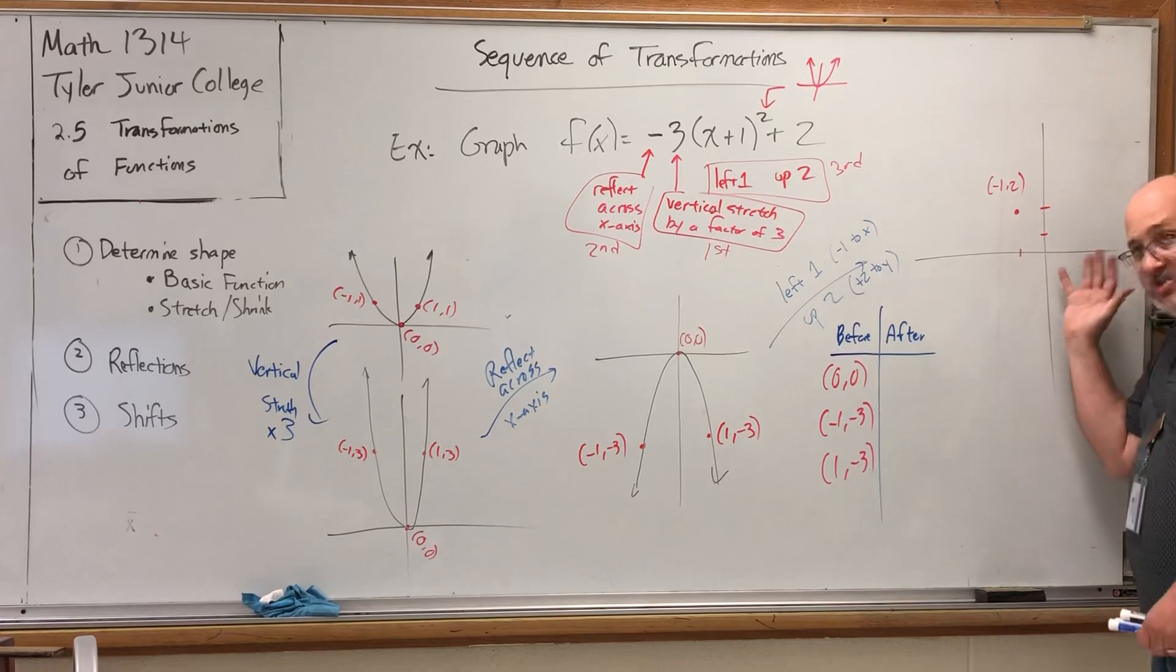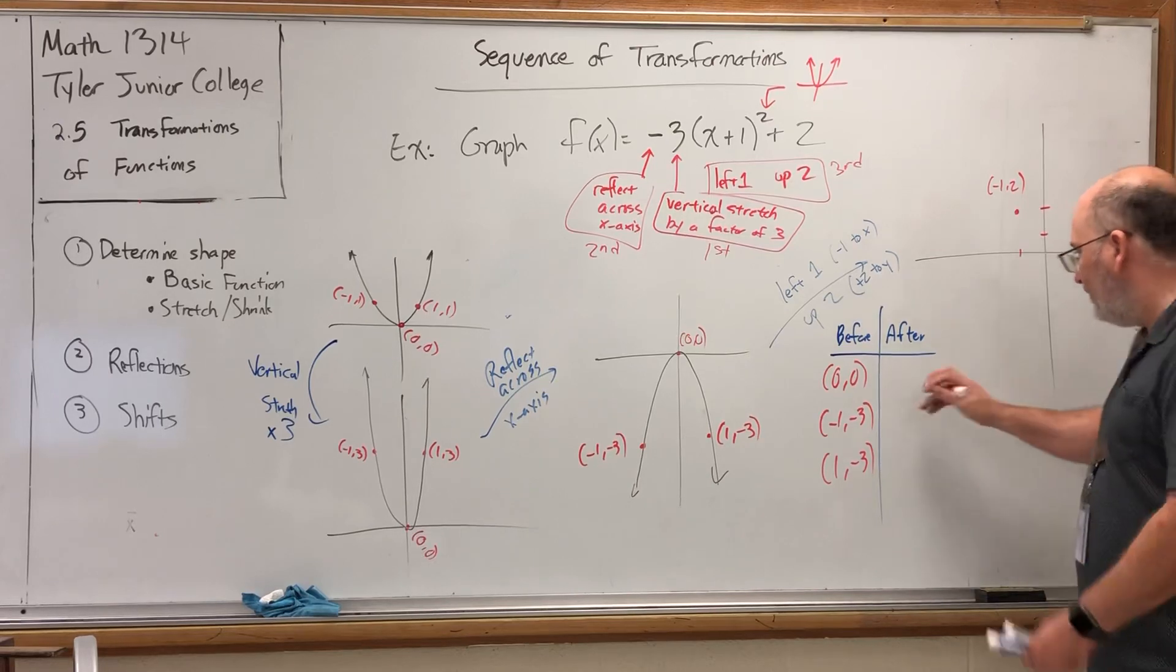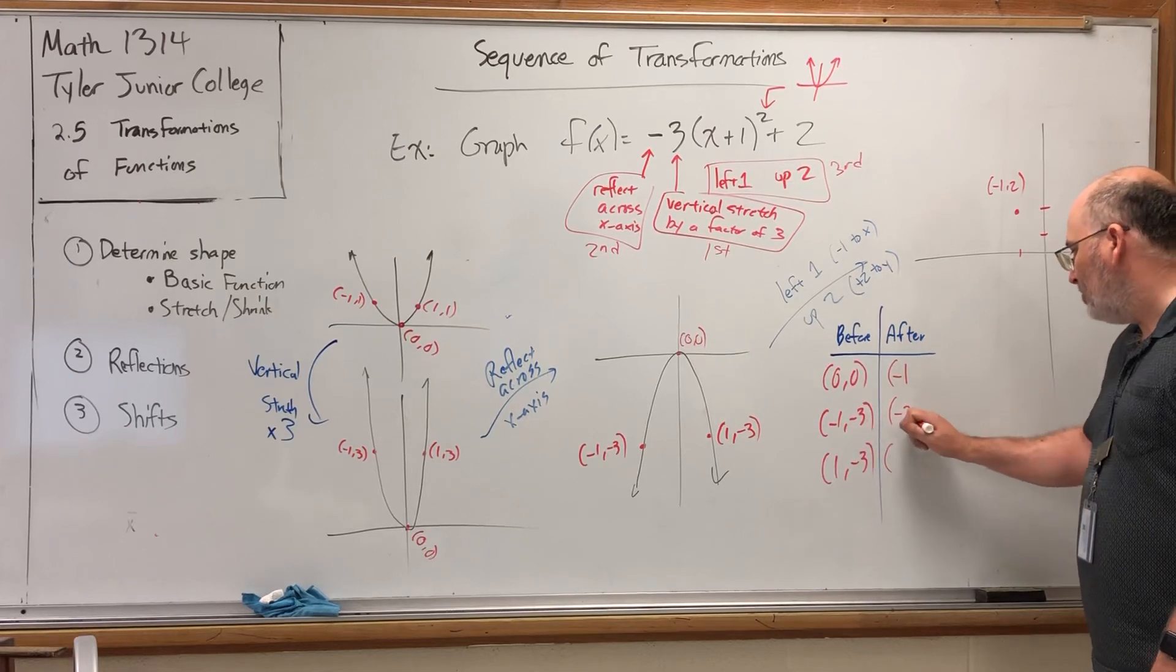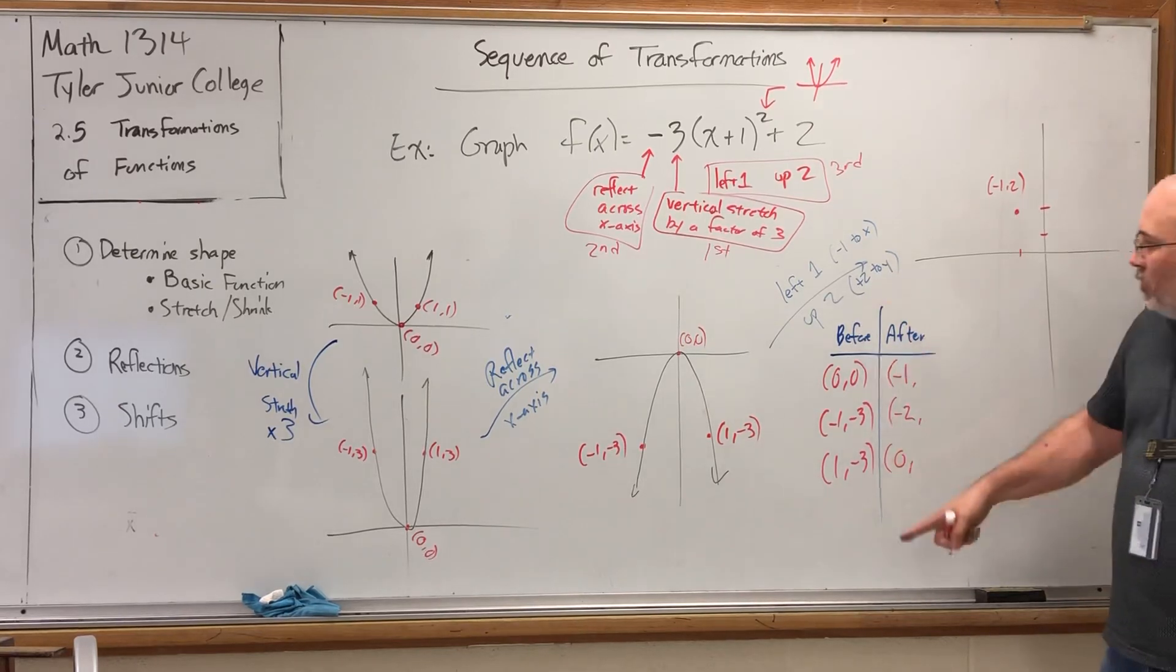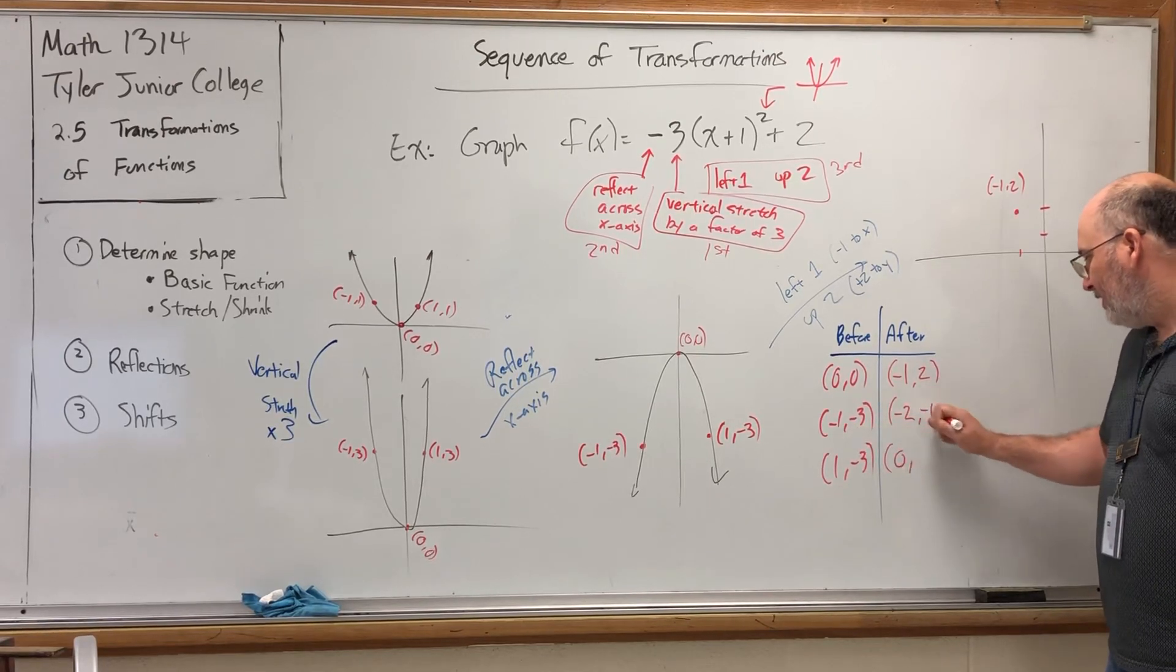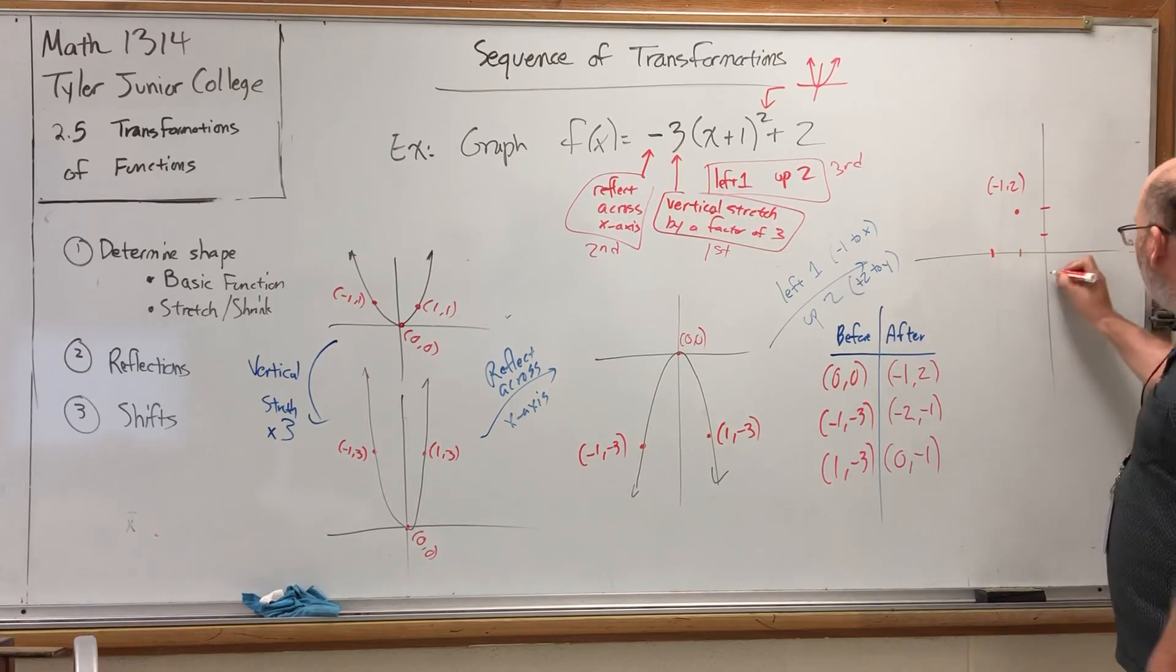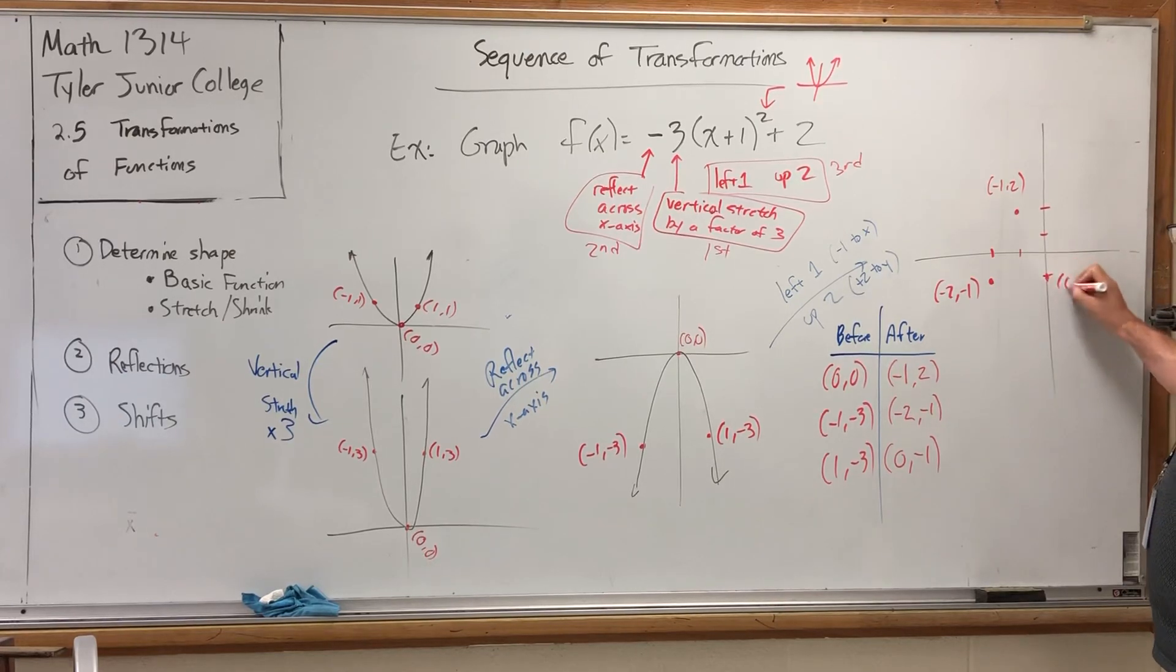Now for this translation, the before and after, the after is subtracting 1 from the x and adding 2 to the y. So let's start by subtracting 1 from each x. 0 minus 1 is negative 1, negative 1 minus 1 is negative 2, 1 minus 1 is 0. And for the up 2, we have to add 2 to the y. So 0 plus 2 is 2, negative 3 plus 2 is negative 1, negative 3 plus 2 is negative 1. And now I can just plot all three of these points. Negative 1 comma 2, negative 2 comma negative 1, negative 2 comma negative 1, and 0 comma negative 1. Keep in mind that we just took that parabola and moved it to the left and up. Here it is.